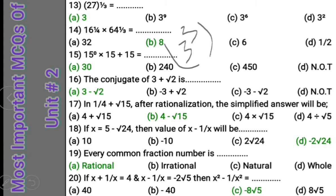Question 14: 16 power 1 upon 4 into 64 power 1 upon 3. For 16: write 2 power 4, whole power 1 upon 4 — the 4s cancel giving 2. For 64: write 4 power 3, whole power 1 upon 3 — the 3s cancel giving 4. Multiplying: 2 into 4 equals 8. So 8 is the simplified answer.